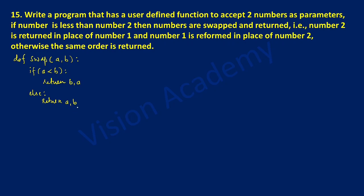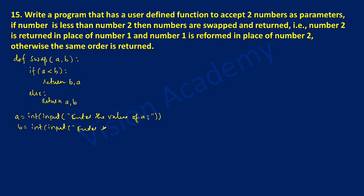For this particular program, we are going to check the results of both these two return values. With the alignment of this definition, I am going to ask the user to enter two numbers. Let us take a equal to integer type of input and ask the user to enter the value of a. Take one more variable b of type integer and in the input statement, ask the user to enter the value of b.